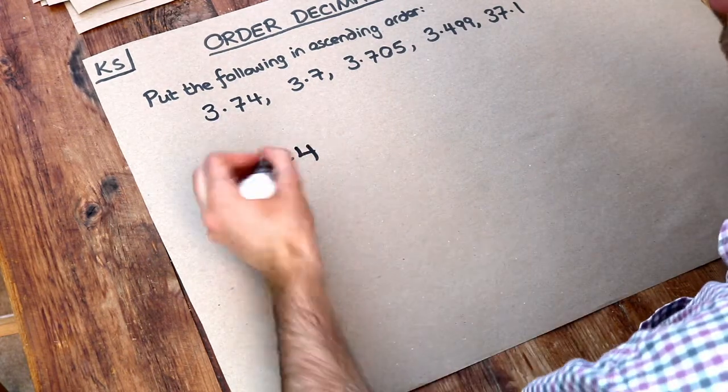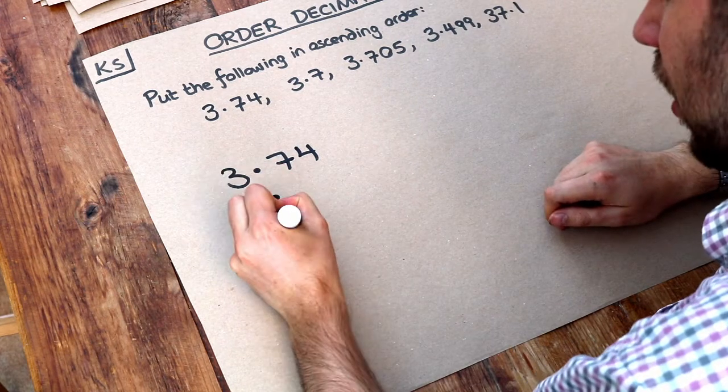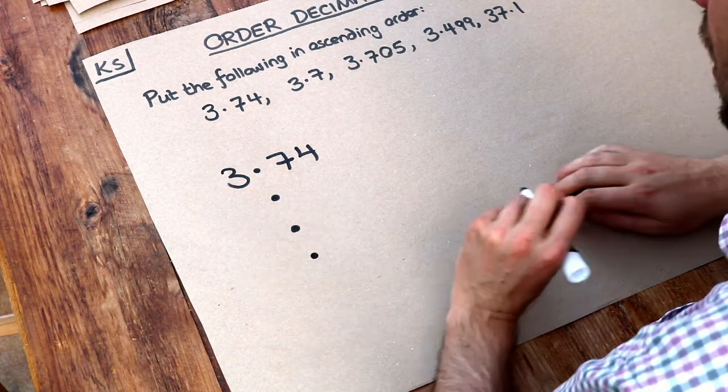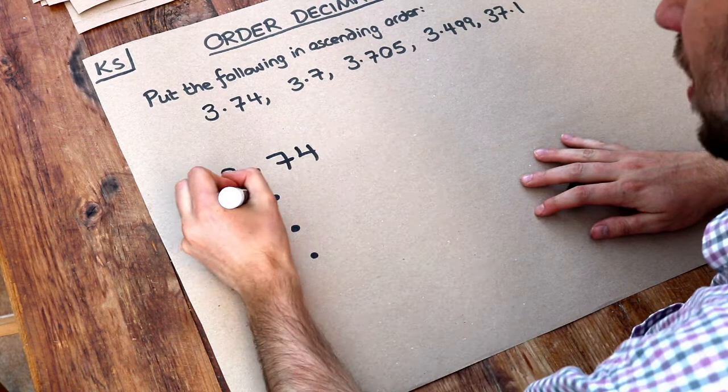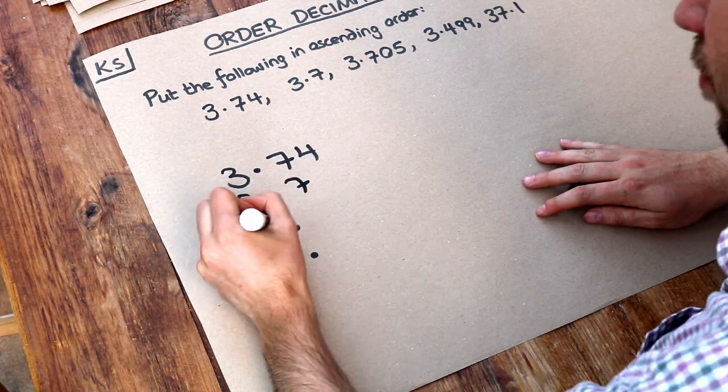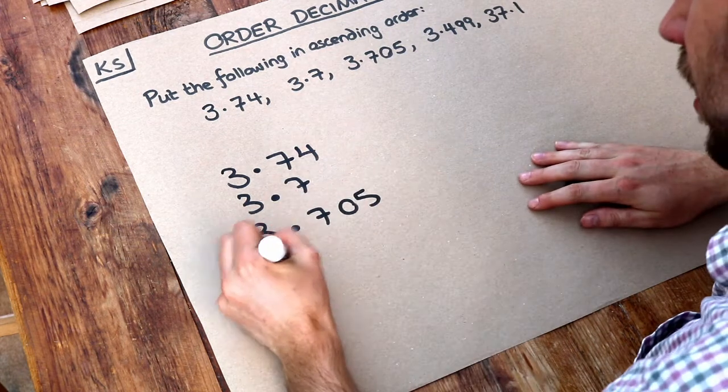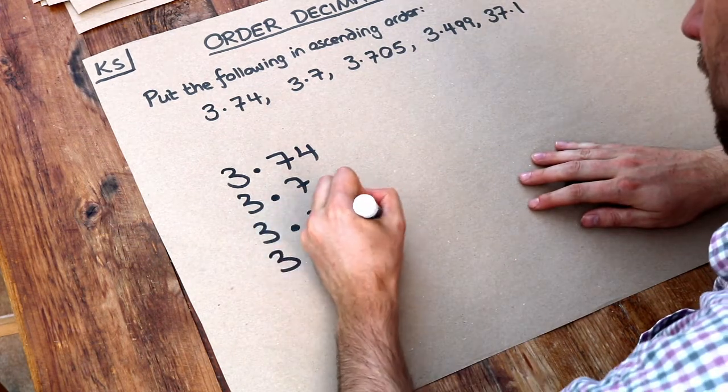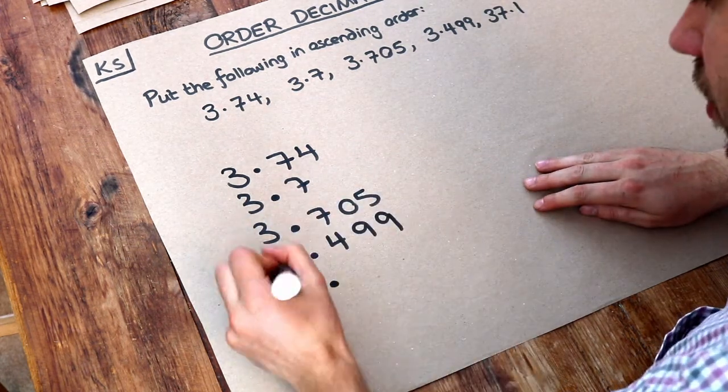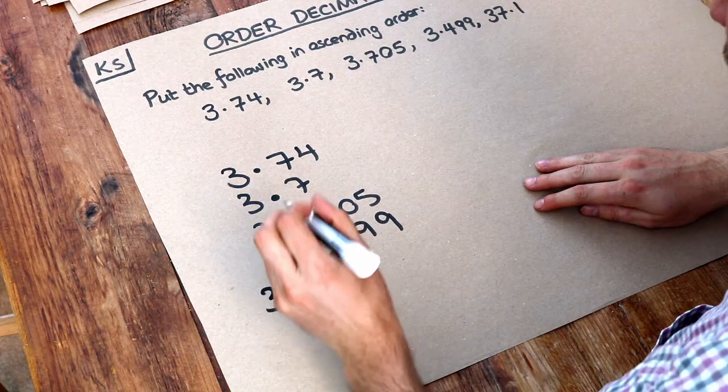So we've got 3.74 and to keep the same place value I'm going to put this decimal point in the same place. Then we've got 3.7, then 3.705, then 3.499 and then we've got 37.1.